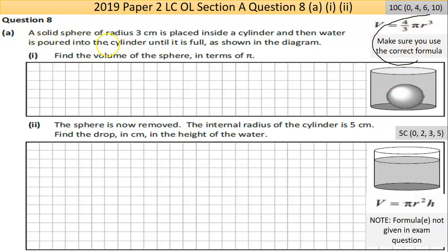A solid sphere of radius 3 centimeters is placed inside a cylinder and then water is poured into the cylinder until it's full. Part 1 asks us to find the volume of the sphere in terms of π. I put the formula in here from the maths tables just for handiness sake.